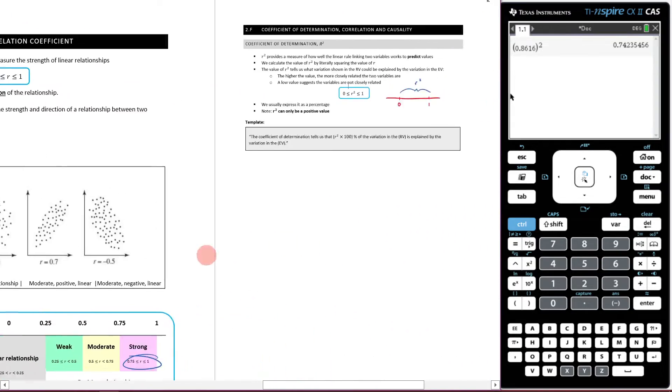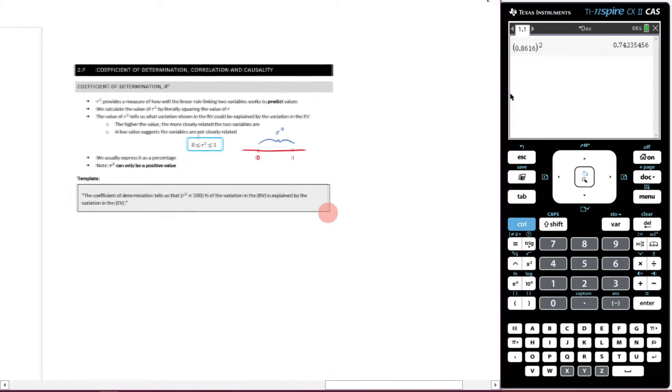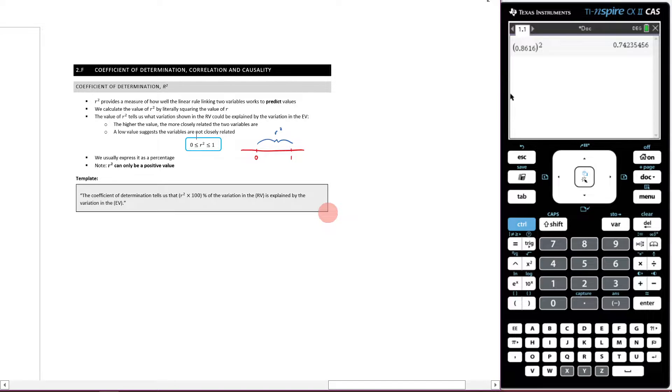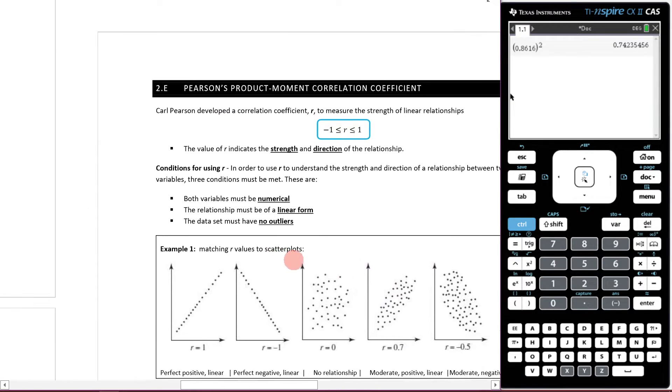This is the coefficient of determination, which measures how well the linear rule linking two variables works to predict values. It's between 0 and 1. The coefficient of determination tells us that r-squared of the variation of the response variable is explained by the variation of the explanatory variable. We need to figure out if r-squared is actually 74%.